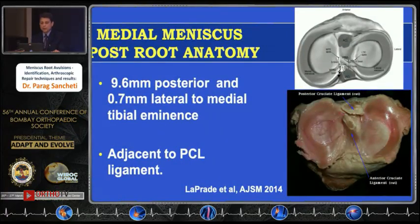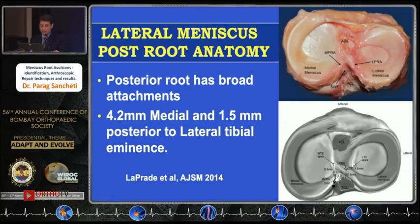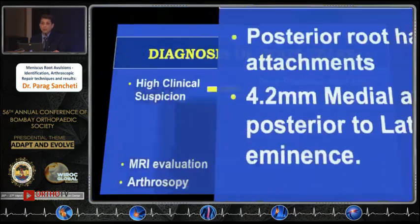The posterior horn medial meniscus is located 9.6 millimeters posterior and 0.7 millimeters lateral to the medial tibial eminence, which is just adjacent to the PCL ligament. This is a good landmark for doing the repair. The posterior root of the lateral meniscus has a broader attachment, located 4.2 millimeters medial and 1.5 millimeters posterior to the lateral tibial eminence, as described by LAPRAD.